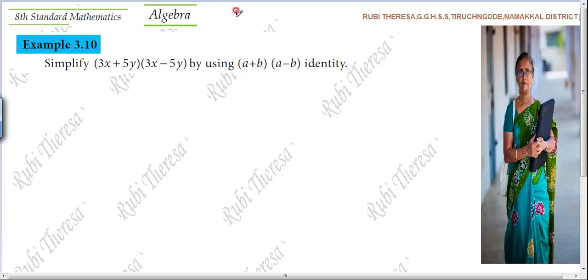I'm going to write 16, 7, 20, 21. Example 3.10. Simplify 3x plus 5y into 3x minus 5y. They have given by using A plus B into A minus B identity.